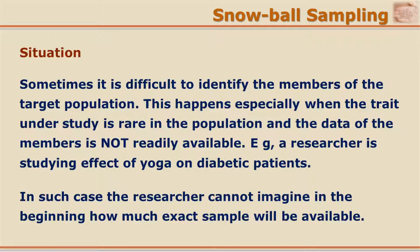Suppose that person gives two references — the researcher goes to collect data from those two references, and this procedure of taking further references and collecting data continues. The data collection began with one person and finally ends with a number the researcher cannot predict in the beginning. It just goes on increasing — as the ball moves it keeps growing — and hence this kind of sampling procedure is called snowball sampling.